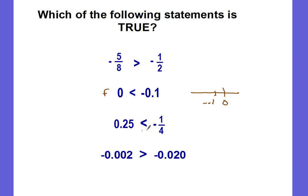The next one involves one-fourth, which I know is 25 hundredths — so it's a negative 25 hundredths. This says a positive is less than a negative — no it's not. This is false.